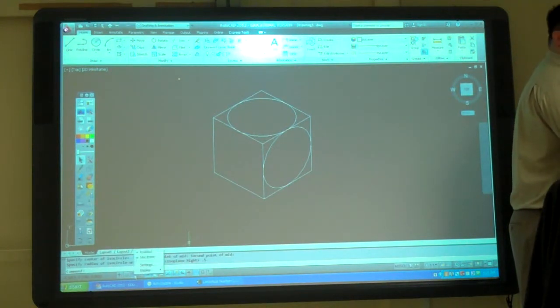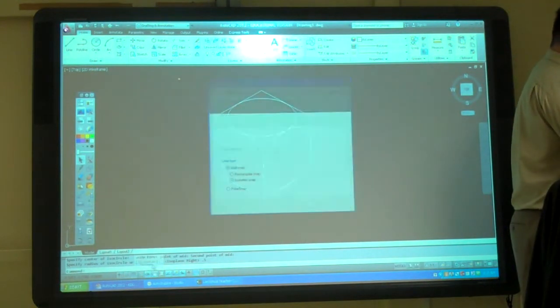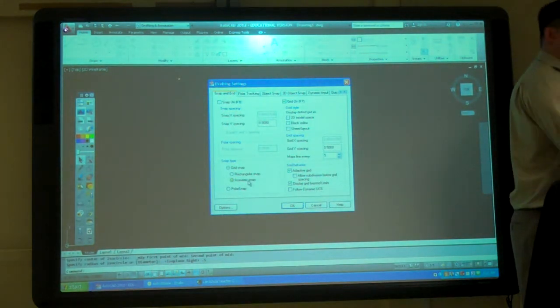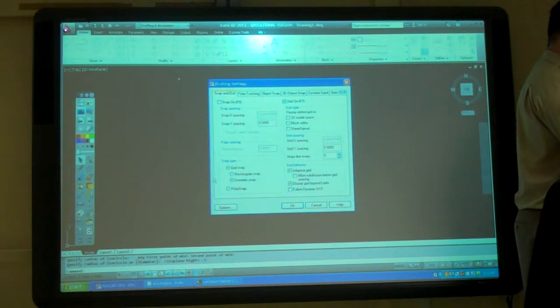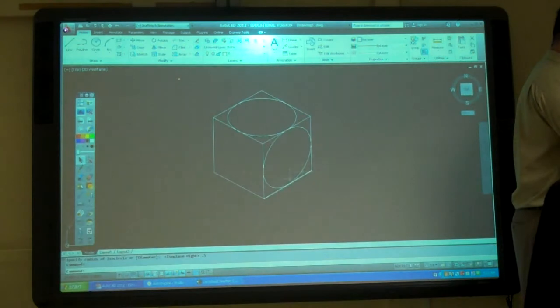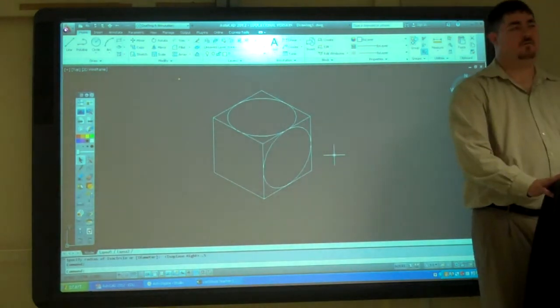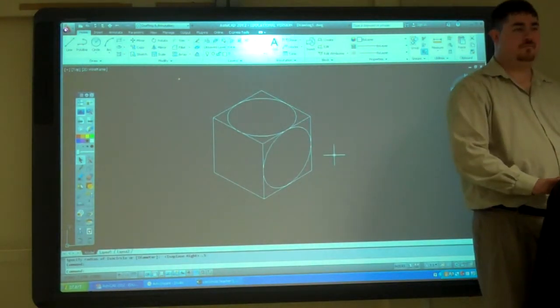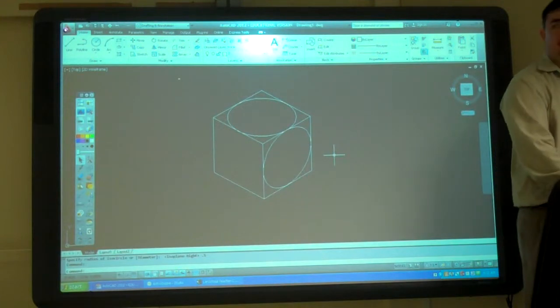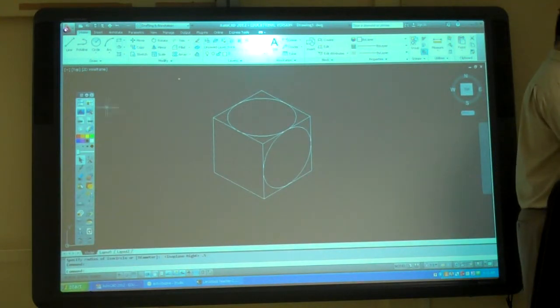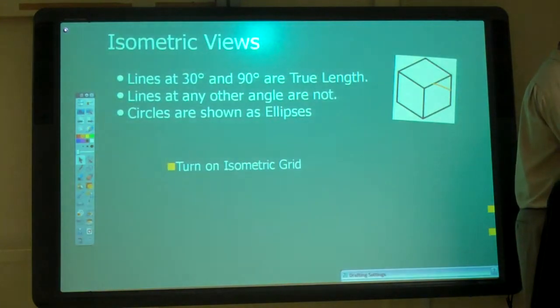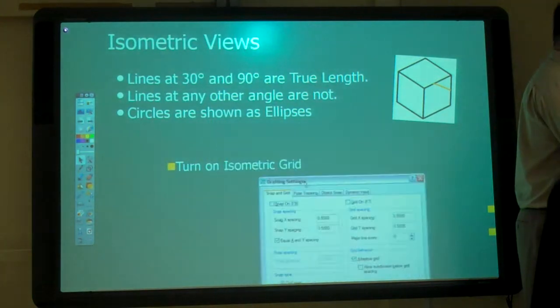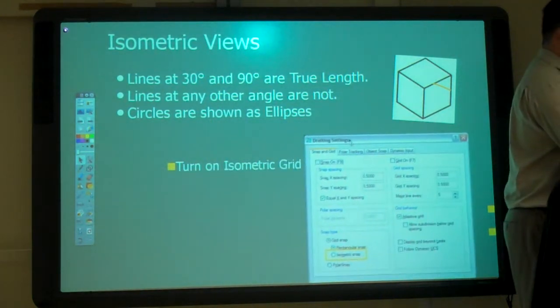Then you can use the ellipse command with the isocircle to get the circle set. Right click down on the grid, settings, isometric snap. I need to also right click on polar settings or object snap or any of these to bring it up. Then just set it back to rectangular.